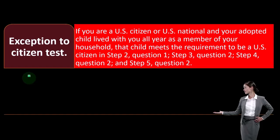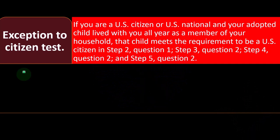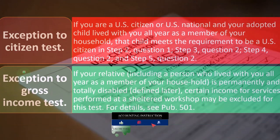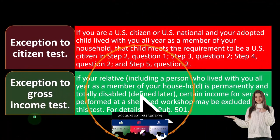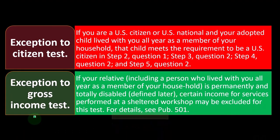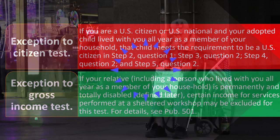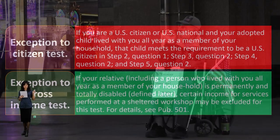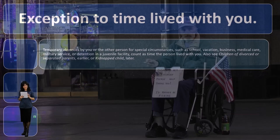You can see Form 8332 for the exception to the citizen test. If you are a U.S. citizen or U.S. national and your adopted child lived with you all year as a member of your household, that child meets the requirement to be a U.S. citizen in step two question one, step three question two, step four question two, and step five question two. Exceptions to the gross income test: if your relative, including a person who lived with you all year as a member of your household, is permanently and totally disabled, certain income for services performed at a sheltered workshop may be excluded for this test. For more details, see Publication 501. Remember, if they're not a qualifying child and they're like an other dependent, that income test was quite low to be able to claim them as a dependent — one of the barriers.